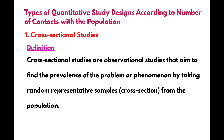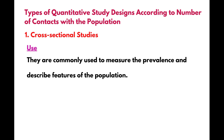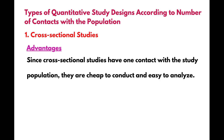Cross-sectional studies are observational studies that aim to find the prevalence of the problem or phenomenon by taking random representative samples — a cross-section — from the population. They are commonly used to measure the prevalence and describe features of the population. Since cross-sectional studies have one contact with the study population, they are cheap to conduct and easy to analyze.